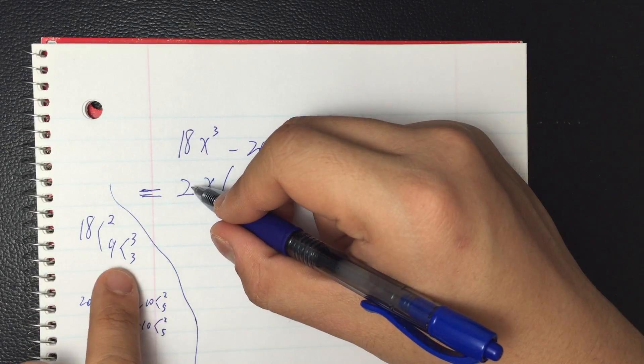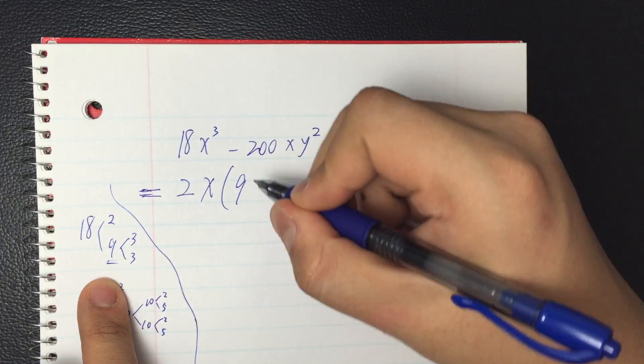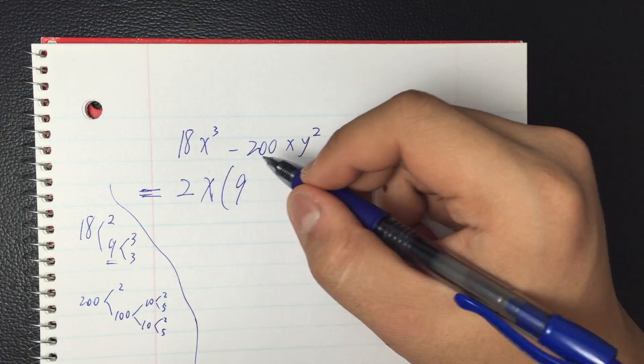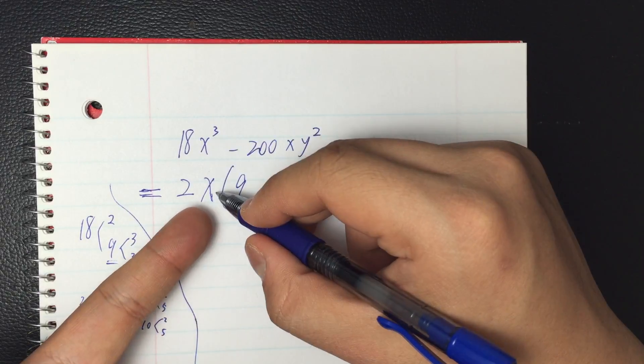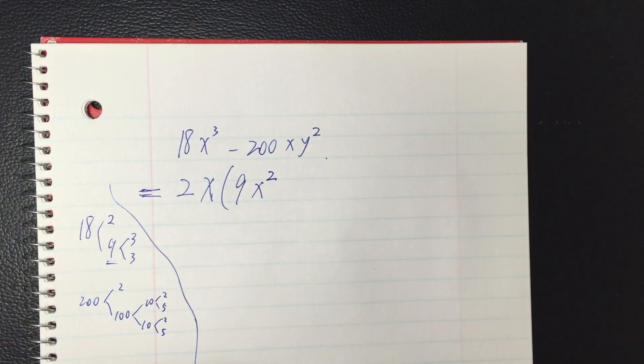Now if I take the 2 out from 18, remaining 9. For x to the third, take the x out, it's like division, so we take one of the x out, we still have two of the x, so remains x squared.